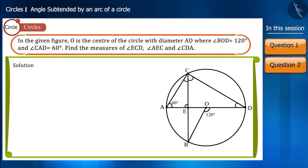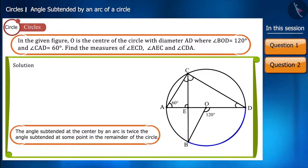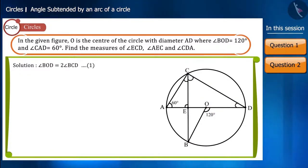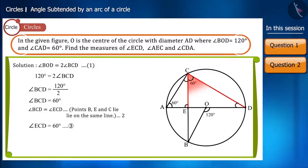Take a look at the figure. Angle BCD and angle BOD are angles subtended by the same arc BD. Angle BOD is the angle subtended at the center, and angle BCD is the angle subtended at point C on the remainder of the circle. We know that the angle subtended at the center by an arc is twice the angle subtended at any point on the remainder of the circle. Therefore, angle BOD equals twice angle BCD. Since angle BOD is 120 degrees, the measurement of angle BCD is 60 degrees, and therefore angle ECD will also be 60 degrees.